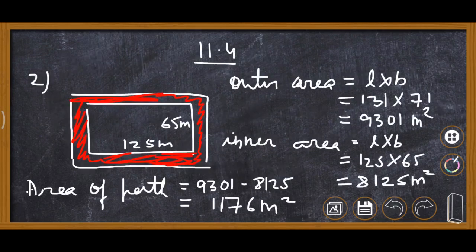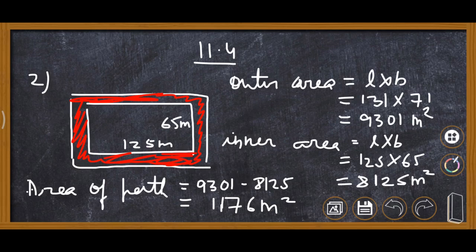Today we are doing question number two of exercise 11.4. First we will find the outer area. The inner length is 125, so outer length is 125 plus 3 plus 3, which is 131. The outer breadth is 65 plus 3 plus 3, which is 71. Multiplying gives 9301 meter square as the outer area.